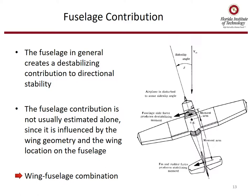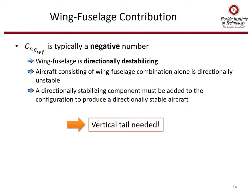The fuselage, in general, creates a destabilizing contribution to directional stability. The fuselage contribution is not usually estimated alone since it's influenced by the wing geometry and wing location, so we typically combine the wing and fuselage when analyzing directional stability. C_n beta of the wing-fuselage is typically a negative number — the wing-fuselage is directionally destabilizing. Aircraft consisting of a wing-fuselage combination alone are directionally unstable, hence the need for a vertical tail.